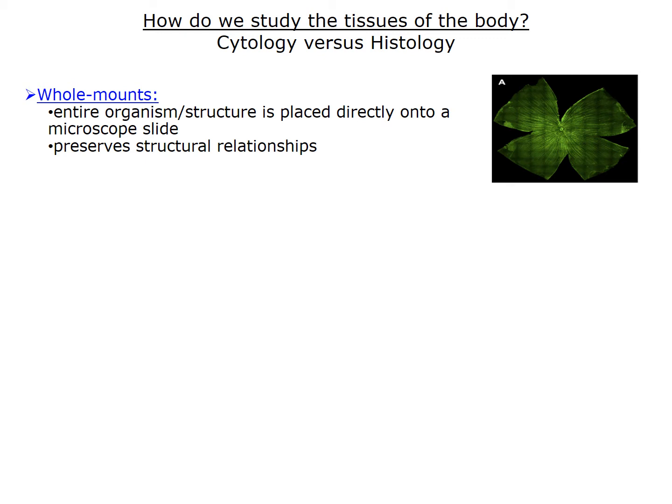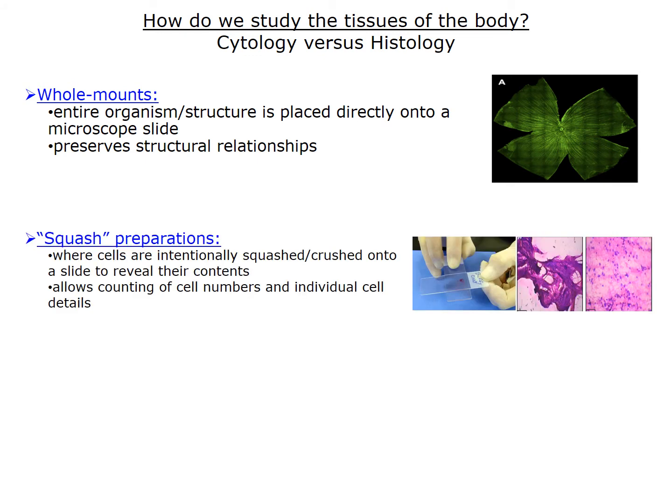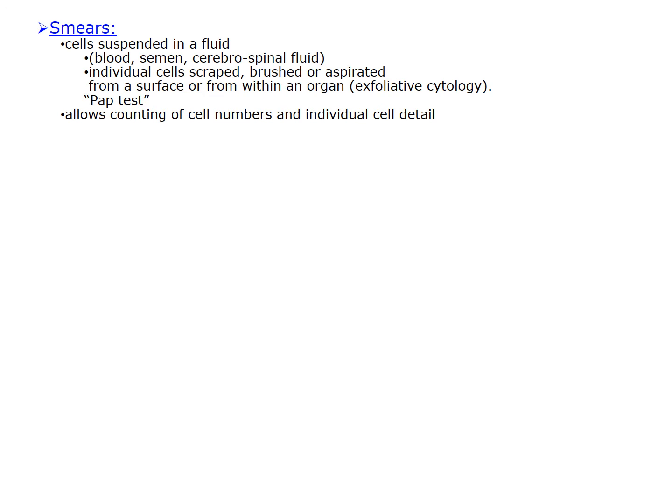This particular example shown here on the right is a flat mount of a mouse retina showing the retinal ganglion cells, which are the cells that are destroyed in glaucoma. Another technique, often called a squash preparation, is useful for counting of cell numbers or seeing individual details. The third type of preparation is called a smear. This is useful for blood cells, swabs from the mouth, or from the vagina, and that procedure is called a pap smear.